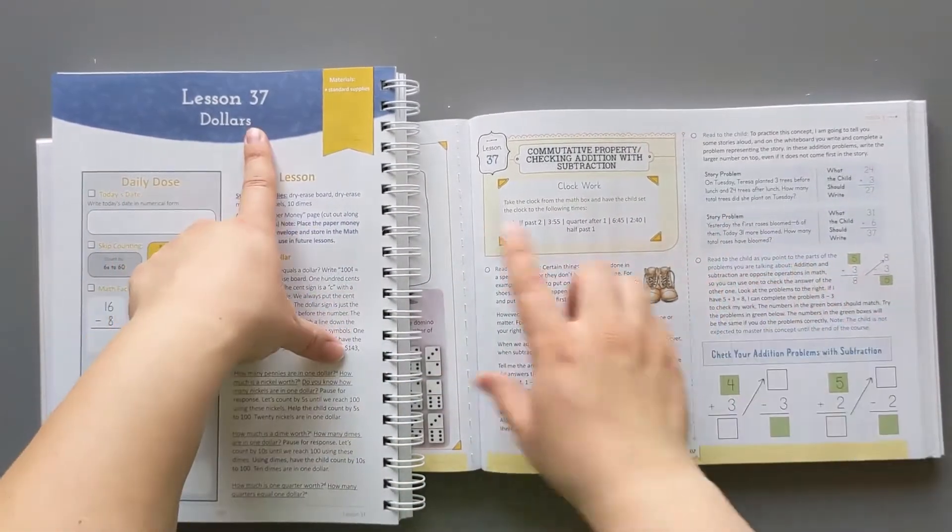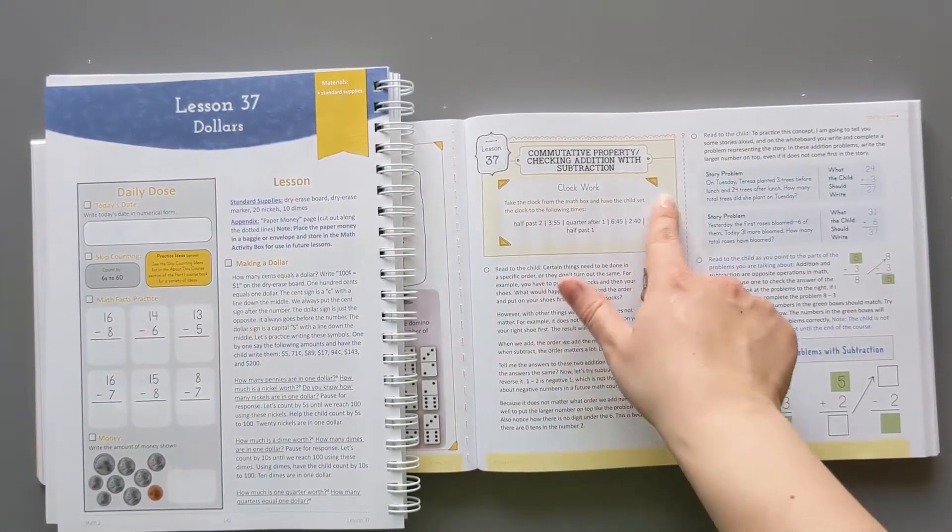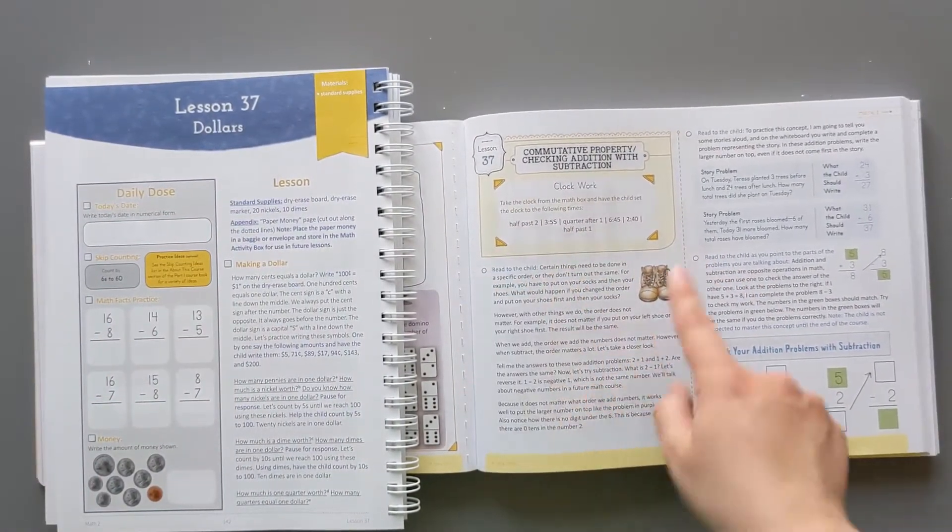Okay, so lesson 37. Here's the daily dose. It's half the page. Over here we have just a small little review.